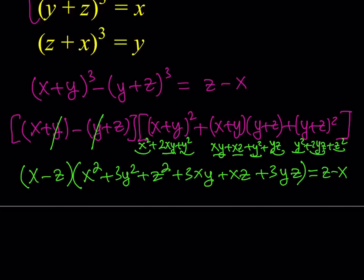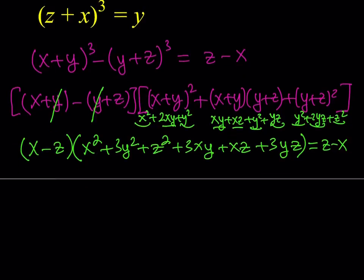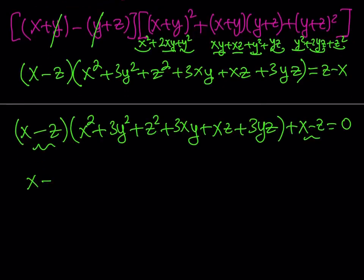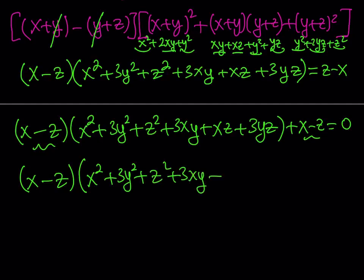Now, one thing I can do is add the opposite of z minus x to both sides, which is x minus z. So if you add x minus z to both sides, then you should get: (x - z) multiplied by [x² + 3y² + z² + 3xy + xz + 3yz]. When you add x minus z to both sides, you get something like this. X minus z is a common factor. We can factor it out. And when we do, we should be getting one of the solutions. The whole thing equals 0.